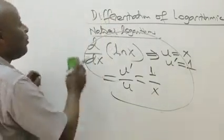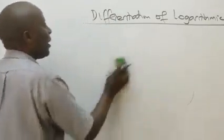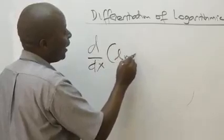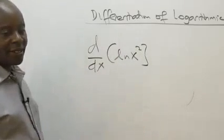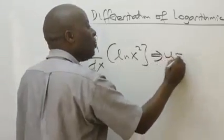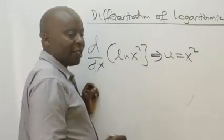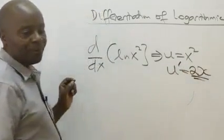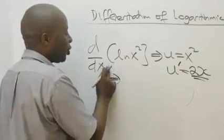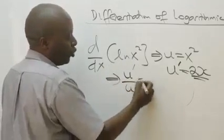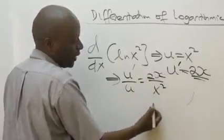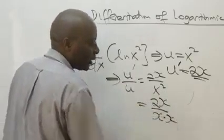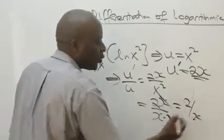Ladies and gentlemen, listen carefully. If you're to get something like this — differentiate ln(x²) — then in this case our u becomes x². And if you look for u-prime, differentiating x² gives you 2x. When you apply u-prime over u, you get 2x over x². Now 2x over x² is the same as 2x over x·x, so x cancels, giving a final answer of 2 over x.